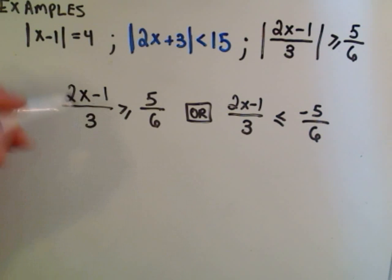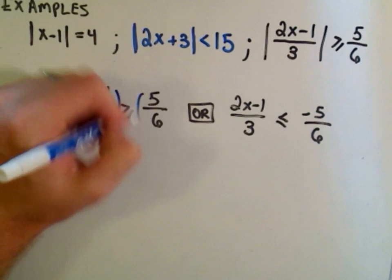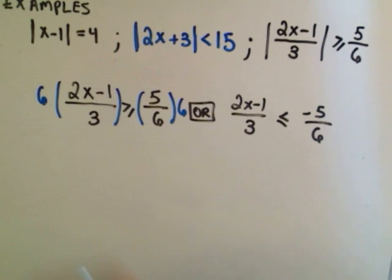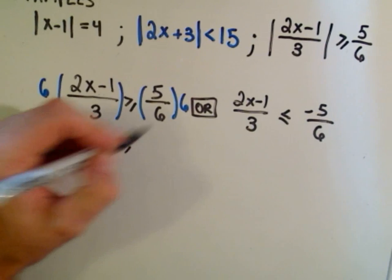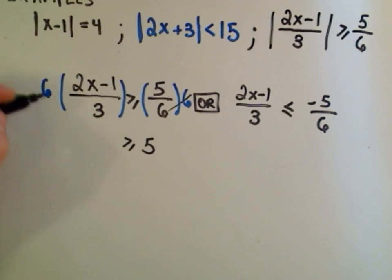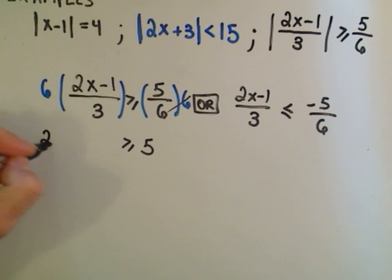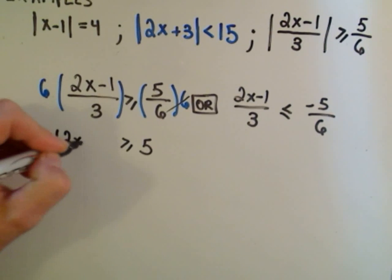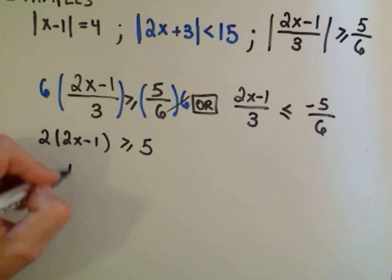To get rid of my fractions, I look at the denominators 3 and 6. What's the smallest number both of those go into, which would be 6. So I'll multiply both sides by that. On the right side, we'll just get 5 after we cancel out the 6's. On the left side, 6 over 3 is 2, and I have to multiply that by 2x minus 1.